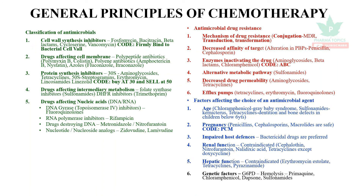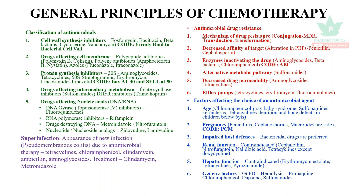Genetic factors — G6PD (glucose-6-phosphate dehydrogenase) deficiency causes hemolysis. Drugs that cannot be used include Primaquine, Chloramphenicol, Dapsone, Sulfonamides, and quinoline derivatives.